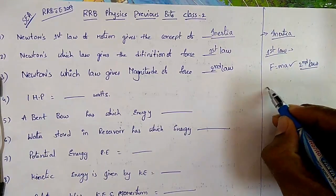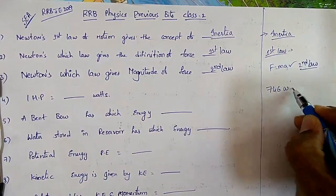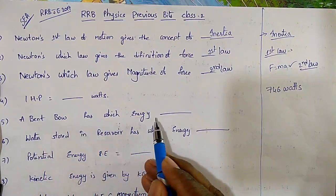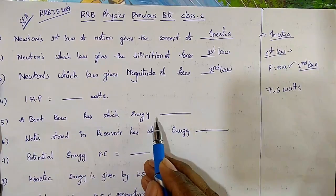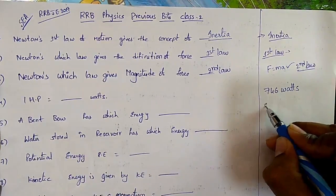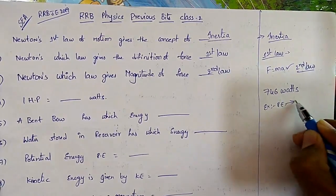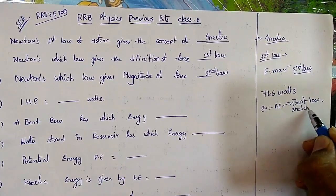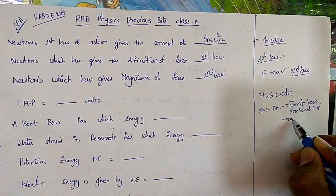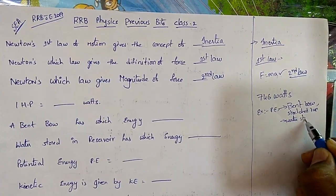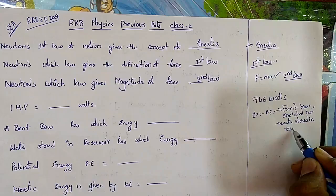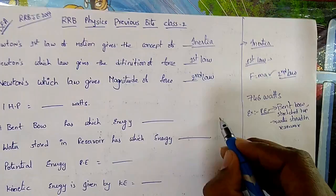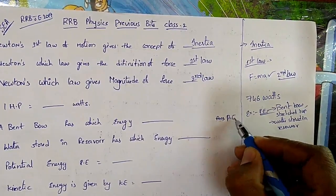One horsepower equals 746 watts. A bent bow has which energy? The examples of potential energy include a bent bow, a stretched rubber band, and water stored in a reservoir. So a bent bow has potential energy.